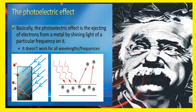So what is this photoelectric effect? Basically, the photoelectric effect is the ejecting of electrons from a metal by shining light of a particular frequency on it. It doesn't work for all wavelengths or frequencies.